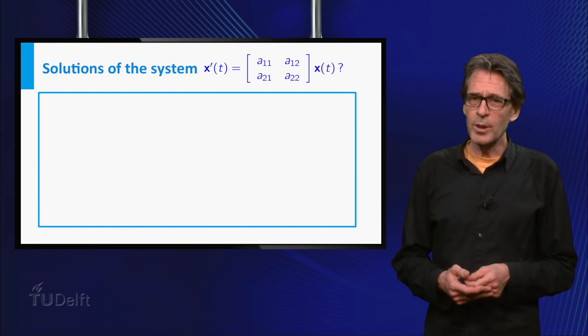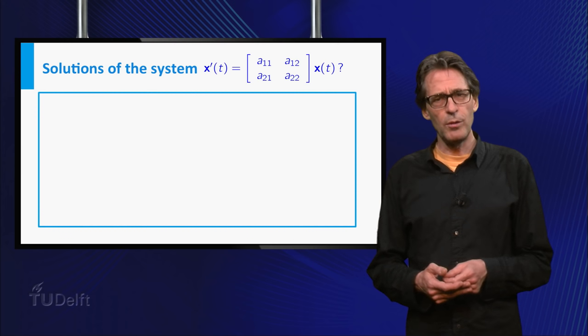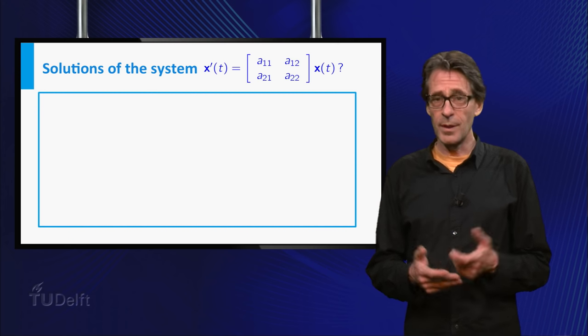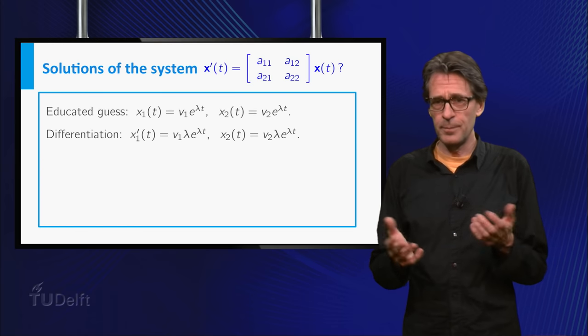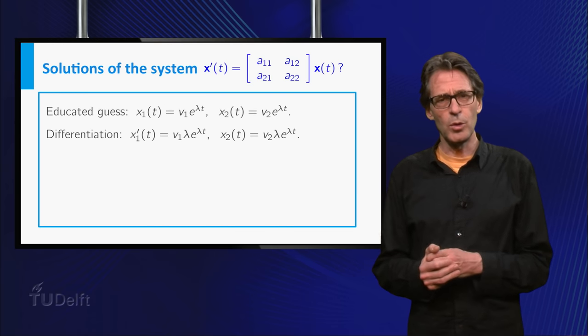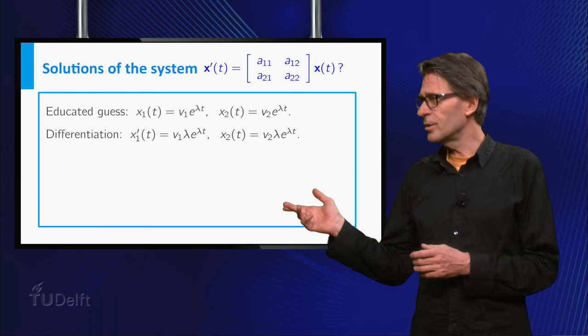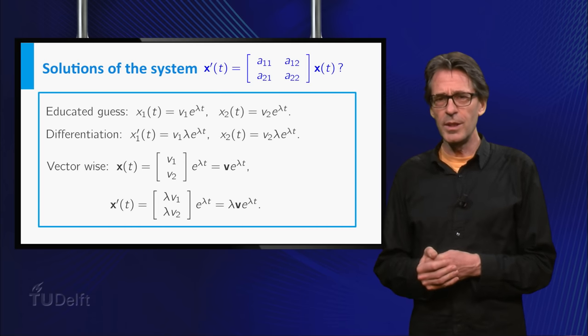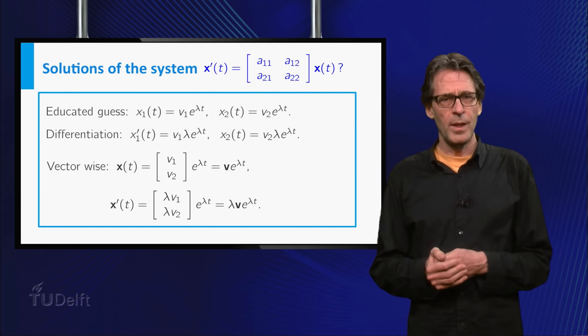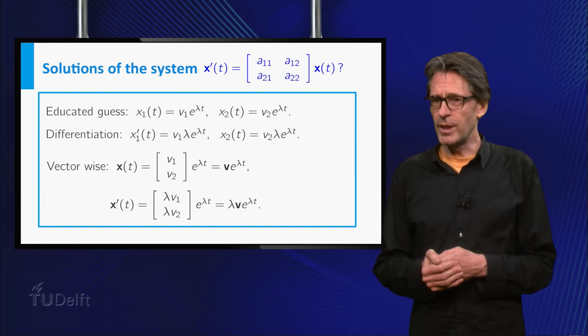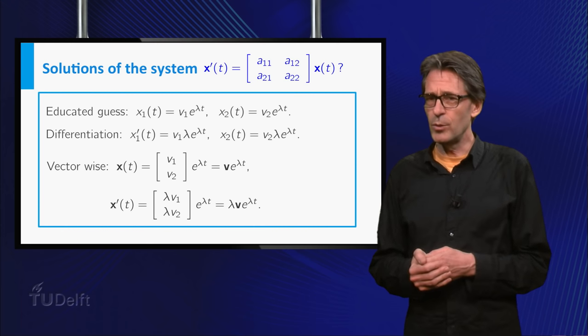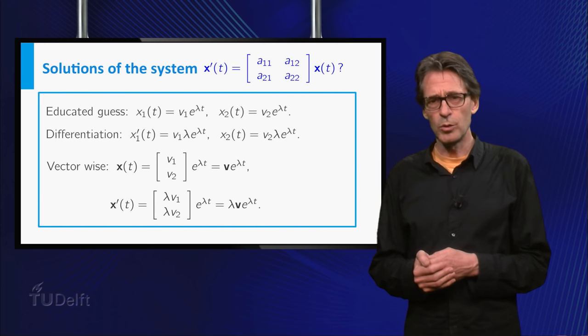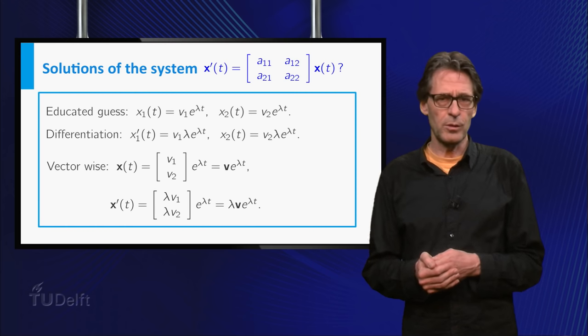It seems a good idea for the system to look for solutions involving linear combinations of exponentials as well. Now which exponentials would work? We can write the solution proposed on the slide in vector form. Note that v is a constant vector here. As you can see, differentiation then takes place component-wise, and you also see that the derivative is a constant multiple of the original vector function.